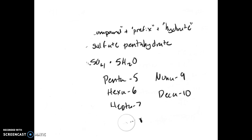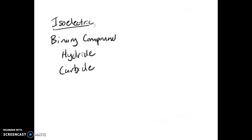Now to close this out, I'm going to throw some more definitions around that we used during this chapter. We're going to talk about isoelectric, binary compound, hydride, and carbide. Something that is isoelectric has the same electron configuration as another atom or ion. A binary compound is any compound that is composed of two elements. A hydride is hydrogen bonded with a metal, and a carbide is carbon bonded with a metal.